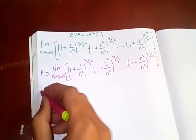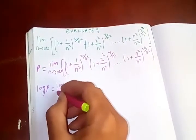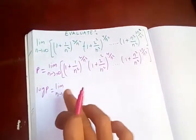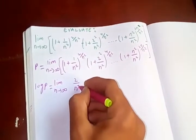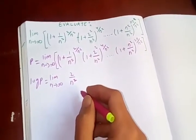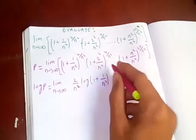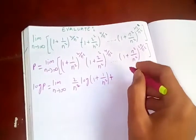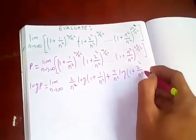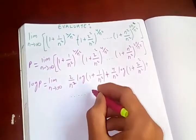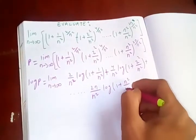Taking logarithm on both sides, the left-hand side is log p. On the right-hand side, since log does not depend on the limit, we can bring it inside. Using the log property log(x^n) = n·log(x), we get: (2/n²)·log(1 + 1/n²). Since this is a product, taking log turns it into a sum: plus (4/n²)·log(1 + 2²/n²), and so on. The nth term is (2n/n²)·log(1 + n²/n²).